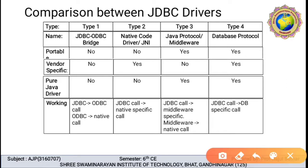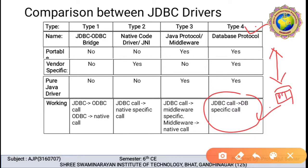Type 4 is the best option since JDBC directly calls through to database-specific calls. One-to-one communication is possible using type 4 driver. JDBC is directly connected with the database, and type 4 driver uses the Java networking library to directly communicate with the database server. This is the advantage of type 4 driver.